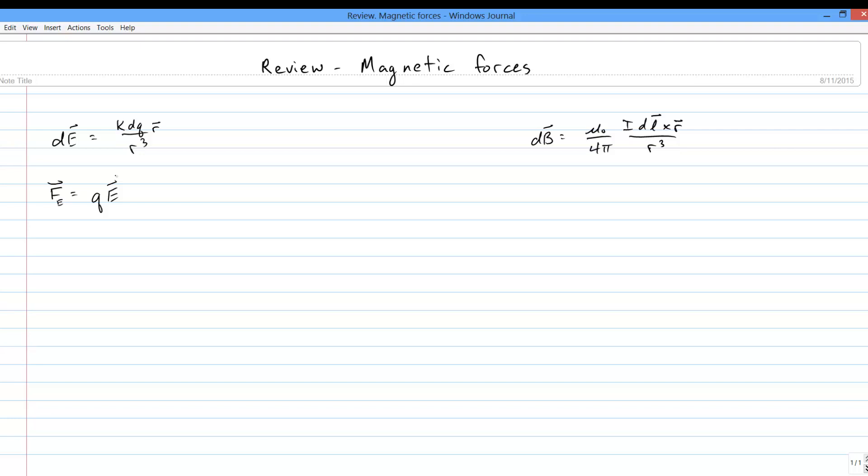The magnetic force law goes like so. The force on some point charge q, moving with velocity v through some magnetic field b, comes from taking q times v crossed with b. It's kind of an odd-looking law, and not nearly as convenient as the electric force law, but it is what it is.